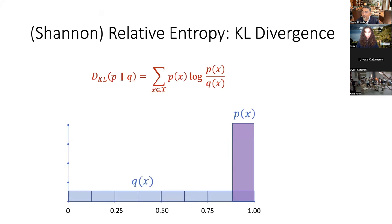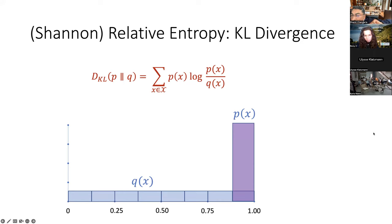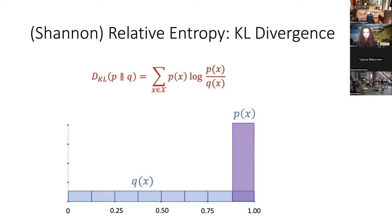Before we move on - show of hands - how many people are familiar with relative entropy, KL divergence? I can see maybe two or three. This is really important, and since you're supposed to be understanding this on a technical basis, let me just go through this because it's kind of important. It's very easy - people are bamboozled by all the mathematics around the free energy principle, but actually it's relatively easy.